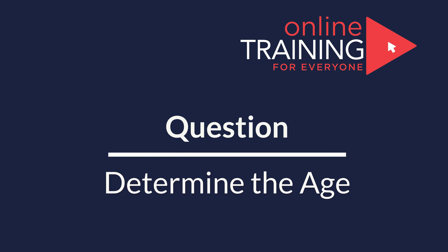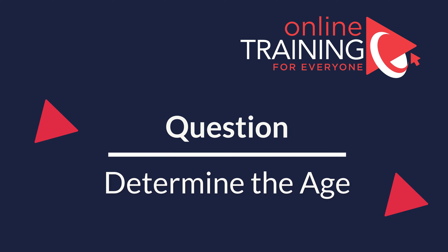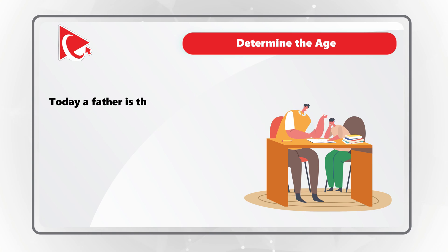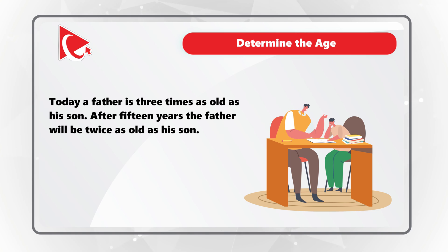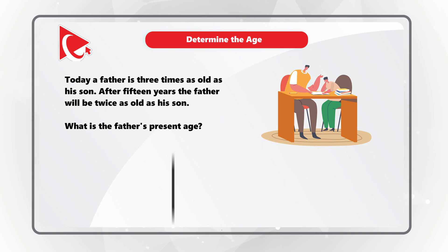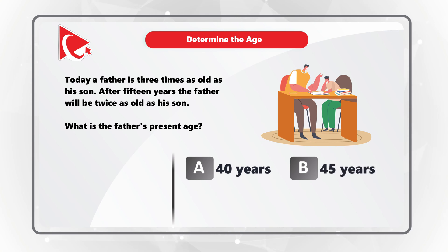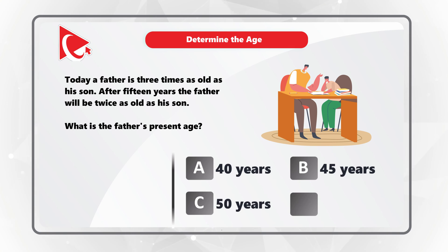Here is a frequent test problem where you need to determine the age of family members. Today, a father is three times as old as his son. After 15 years, the father will be twice as old as his son. What is the father's present age? You have four different choices: choice A – 40 years, choice B – 45 years, choice C – 50 years, and choice D – 55 years. Do you see the answer? Give yourself a little bit of time to see if you can come up with the solution.